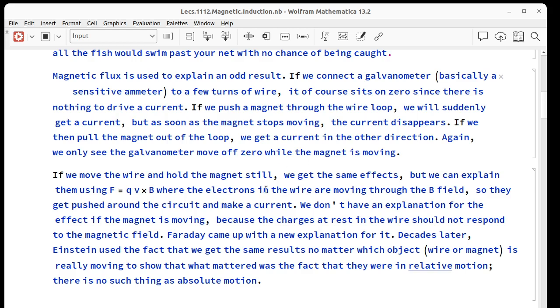We don't have an explanation for what happens when we hold the wire still and move the magnet though, because the charges shouldn't be responding to the magnetic field, right? If we're holding the wire still and let the magnet move, we have no velocity. Faraday was the first one to discover this, and his explanation for it is that the change in flux is what matters. Einstein used the same experiment to show that it doesn't matter which one moves because of relative motion being the only significant thing.